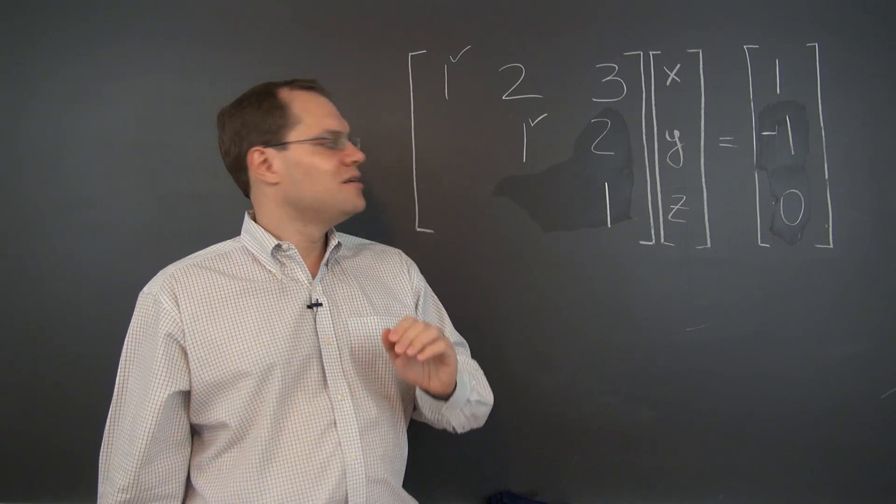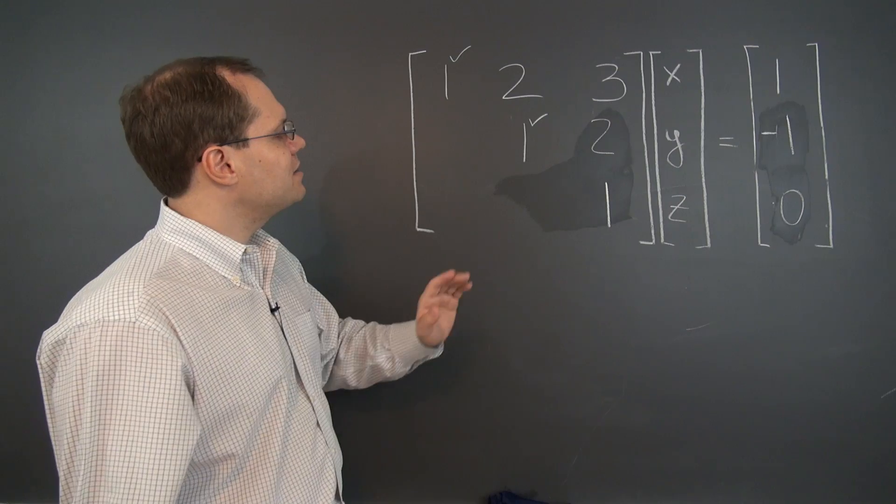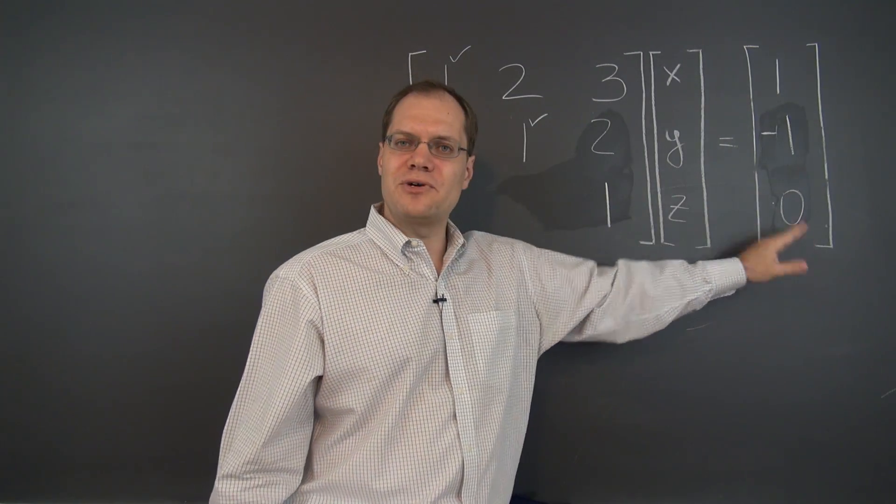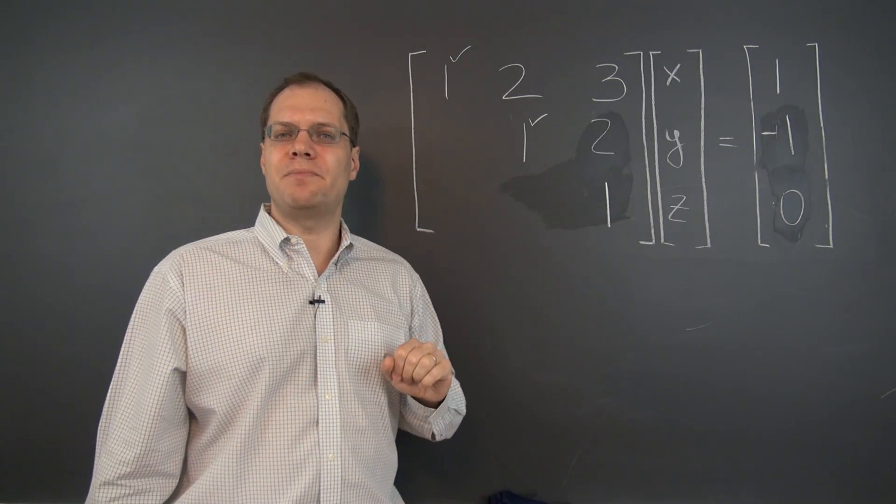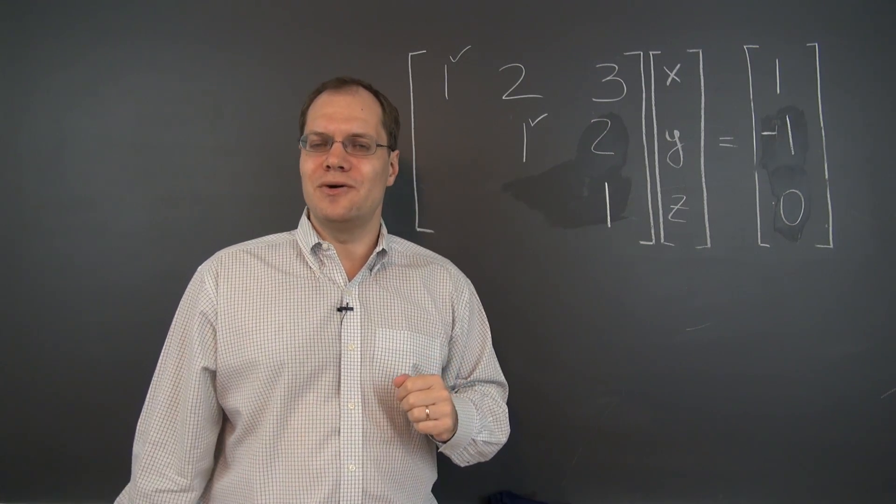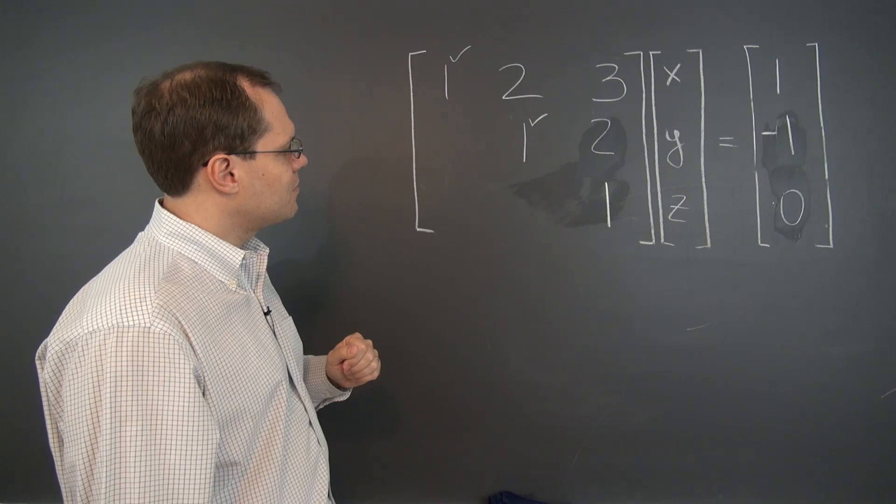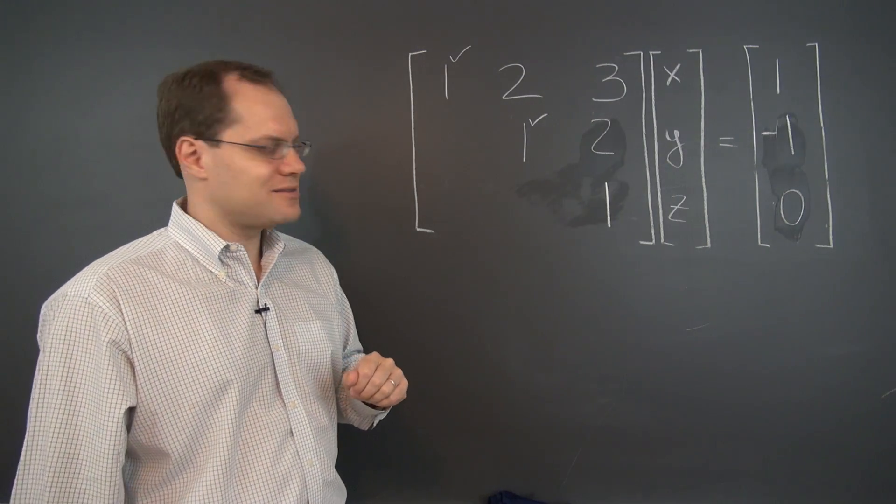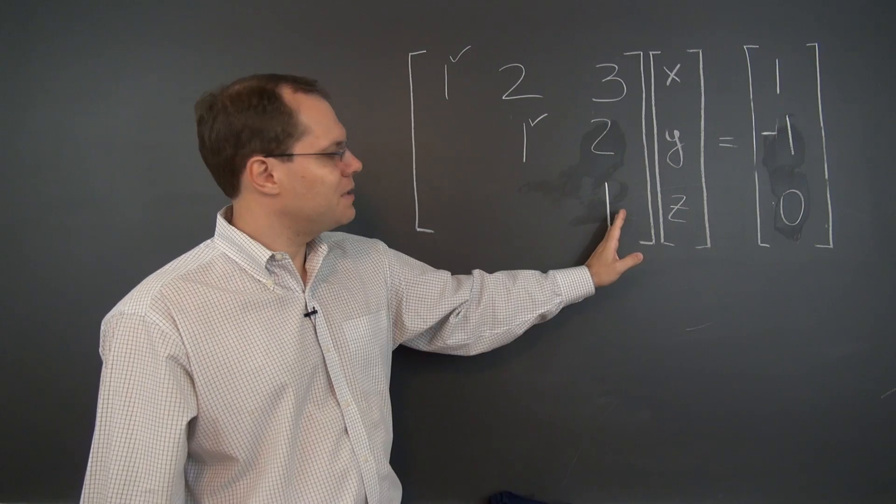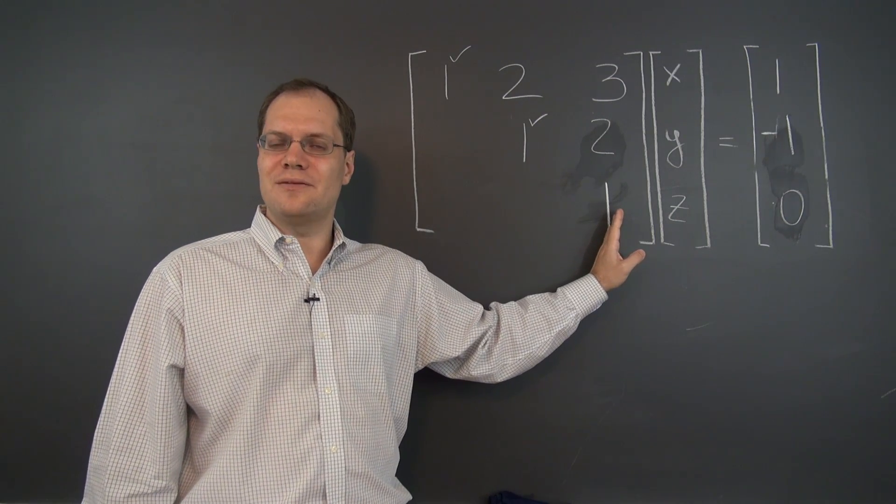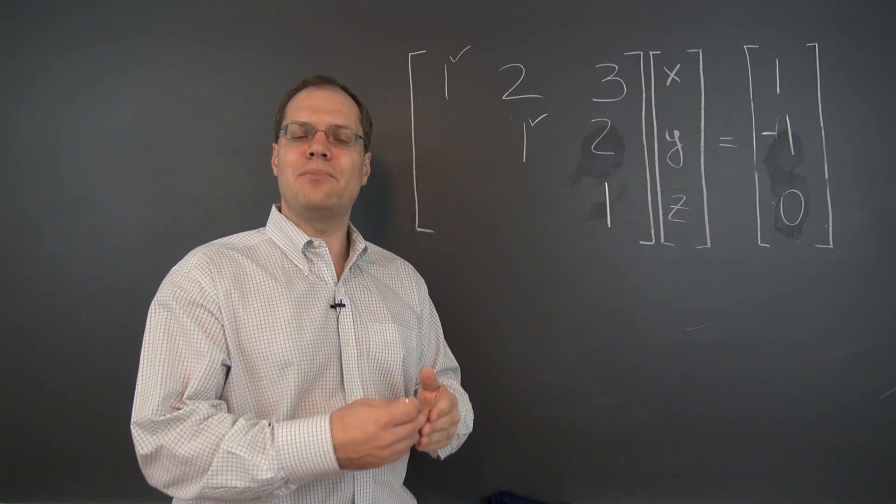So let's proceed with Gaussian elimination and maybe at some point the relationship of the right-hand side to the columns will become apparent and we won't have to go any further. So at this point, it's almost apparent just because we see that we may not take any of column three.